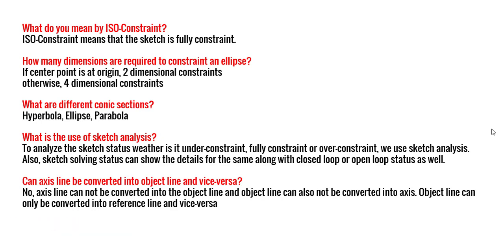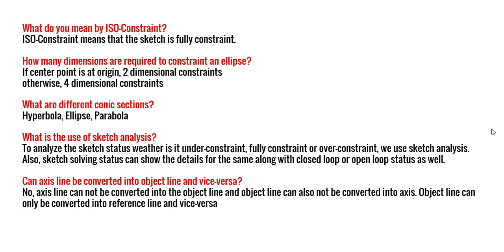Can an axis line be converted into an object line and vice versa? When explaining construction lines, I had discussed that an axis line actually cannot be converted into an object line. Similarly, an object line cannot be converted into an axis line. However, an object line can be converted into a reference line, and a reference line can be converted back into an object line. So with the reference element you can go vice versa, but with the axis line you definitely cannot.